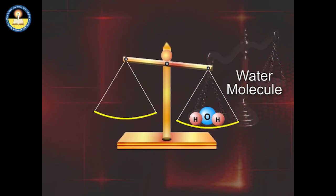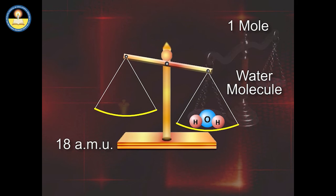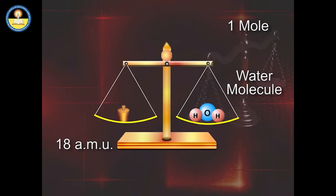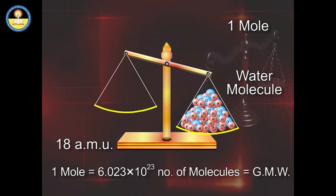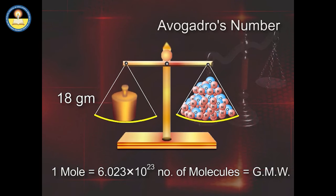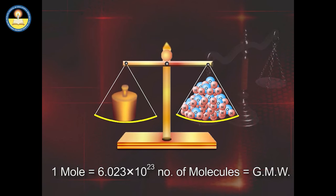Taking another example of a water molecule: 6.023 × 10²³ water molecules will weigh 18 grams, which equals Avogadro's number. This also means that 1 mole equals 6.023 × 10²³ molecules, which equals 1 gram molecular weight.